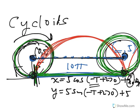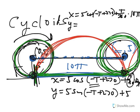Maybe that's a little hard to see, so I'll write it up again. x equals 5 cosine(-t + 270) plus t over 360 times 10π. I like to use degrees. And the y value is 5 sine(-t + 270) plus 5, because the y coordinate of that point is always 5.